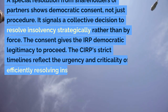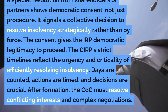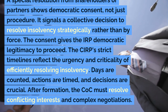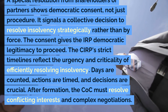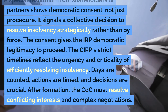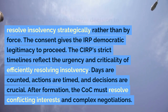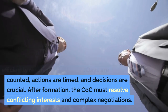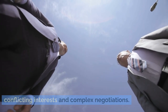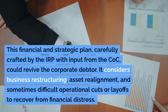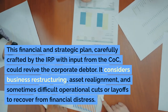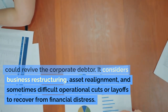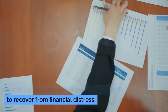A special resolution from shareholders or partners signals a collective decision to resolve insolvency strategically rather than by force, giving the IRP democratic legitimacy to proceed. The CIRP's strict timelines reflect the urgency of efficiently resolving insolvency — days are counted, actions are timed, and decisions are crucial. After formation, the committee of creditors must resolve conflicting interests through complex negotiations. The financial and strategic plan crafted by the IRP with COC input could revive the corporate debtor through business restructuring, asset realignment, or difficult operational cuts.